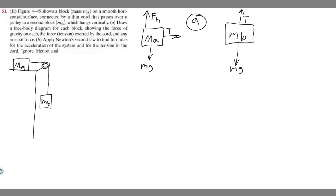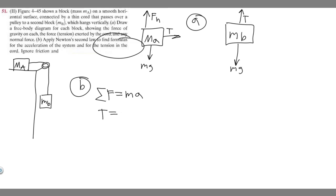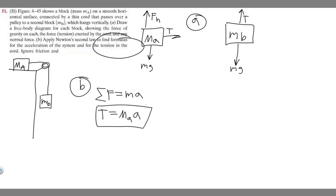Now let's move on to part B. We need to apply Newton's second law to find formulas for the acceleration of the system and for the tension in the cord. Starting with block A: the sum of all forces equals mass times acceleration. We're focusing on the x-direction because we're solving for T. The only force in the x-direction is T, so T equals M sub A times A.